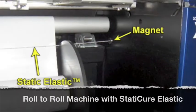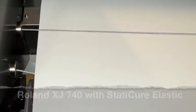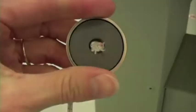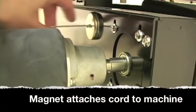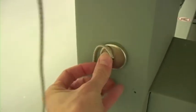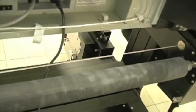The Static Cure elastic cord is easy to install on your roll-to-roll machines. Using two magnets, attach the cord to the metal of the machine. Simply place the cord across the sheet as it moves between the roll and the machine, before it touches the print area.